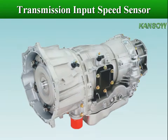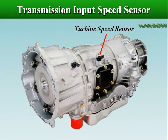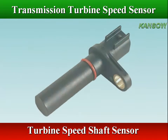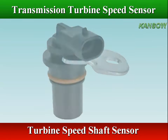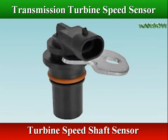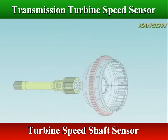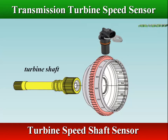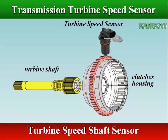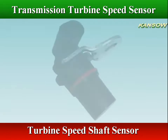The automatic transmission turbine speed sensor measures the speed of the turbine shaft or clutch's input shaft. The electronic transmission control module uses the information provided by the turbine speed sensor to determine the amount of torque converter clutch slippage.